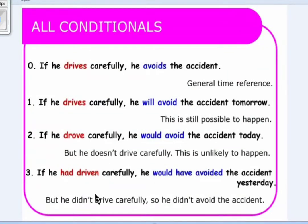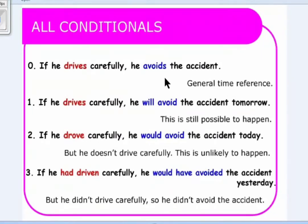Now we have all four conditionals. The zero conditional — look here: 'If he drives carefully, he avoids the accident.' This is a general time reference; we are giving advice or stating a general truth, so both verbs are in the present simple tense. First conditional: 'If he drives carefully, he will avoid the accident tomorrow.' This is still possible to happen — it's in the future or present time.